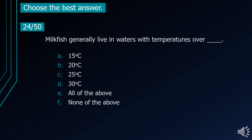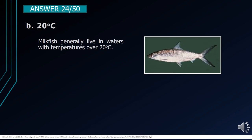Number 24. Milkfish generally live in waters with temperatures over blank. A. 15 degrees Celsius. B. 20 degrees Celsius. C. 25 degrees Celsius. D. 30 degrees Celsius. E. All of the above. F. None of the above. The correct answer is letter B, 20 degrees Celsius. Milkfish generally live in waters with temperatures over 20 degrees Celsius.